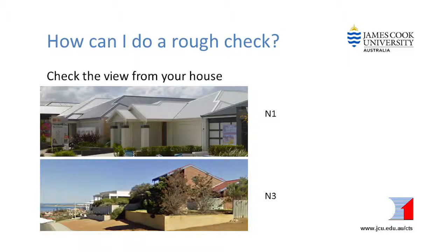The bottom photo is the view from a house with an N3 wind classification. The resident has a view all the way over the next suburb to the ocean.